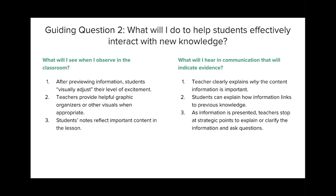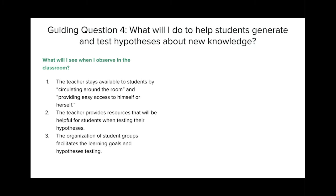The fourth question ensures that teachers efficiently guide their students through generating and testing hypotheses. One visual piece of evidence might be that the teacher stays available to students by circulating around the room and providing easy access to himself or herself. Second, the teacher clearly provides resources helpful for students when testing their hypotheses. And third, the organization of student groups facilitates the learning goals and hypotheses testing.